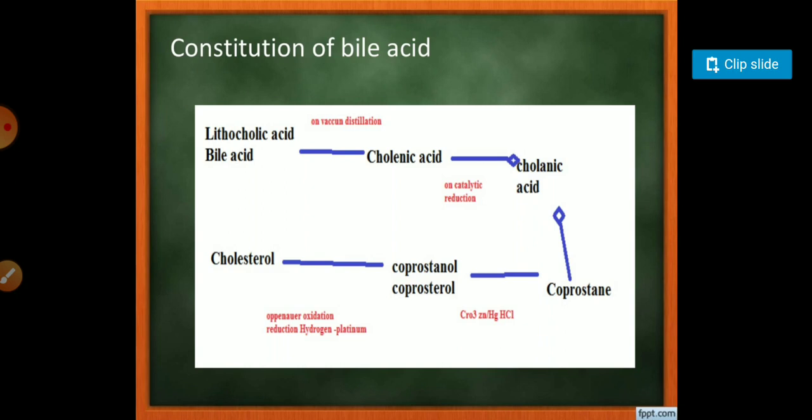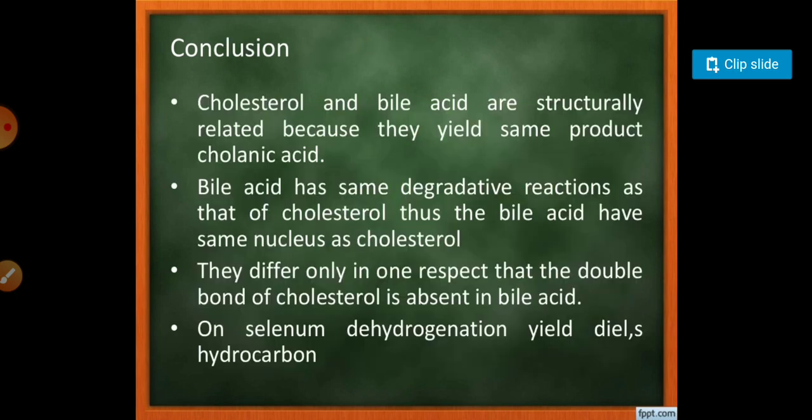You can see the constitution of bile acid in this diagram showing the pathway from bile acid to cholesterol via cholanic acid. Cholesterol and bile acid are structurally related because they yield the same product, cholanic acid. The bile acid has degradative reactions showing it has the same nucleus as cholesterol. They differ only in that the double bond of cholesterol is absent in bile acid.